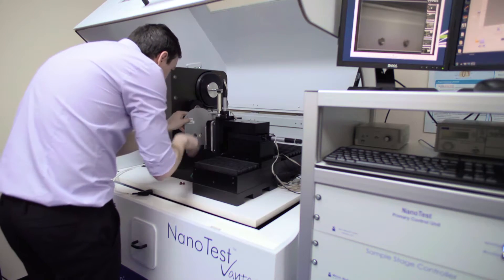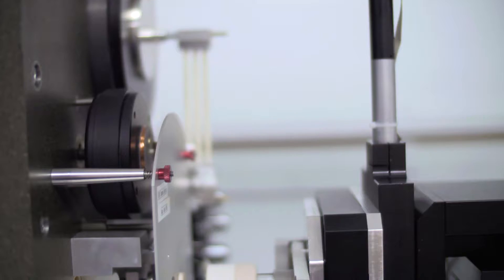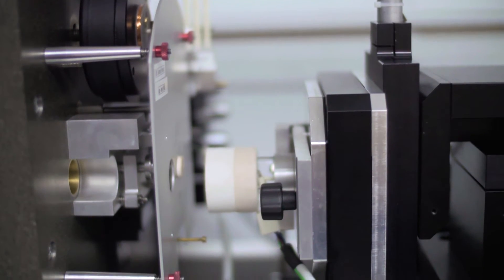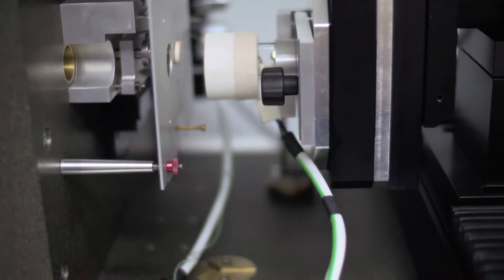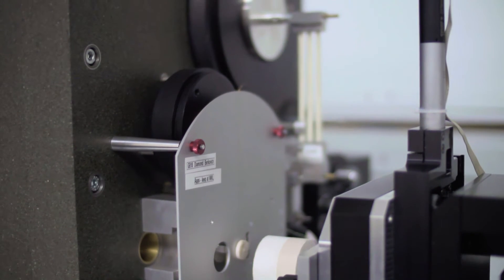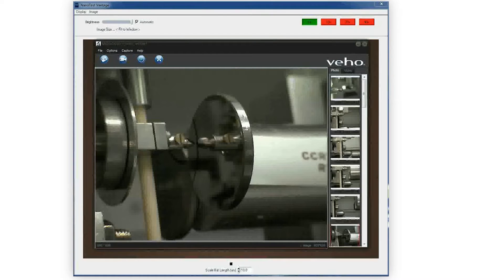The NanoTest Vantage offers industry-leading ultra-low thermal drift. This is achieved through a dedicated environmental enclosure with active temperature control and the high thermal mass of the instrument. This high thermal stability allows long-duration creep tests to be performed reliably and accurately.